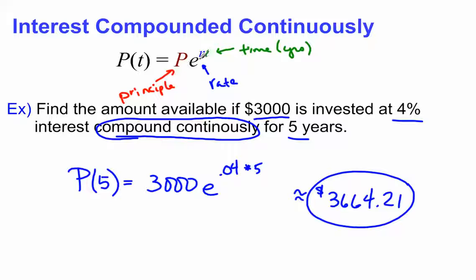P is still the principal, R is still the rate, which we express as a decimal, and T is time in years. The only difference is we note that it's compounded continuously, so we don't have that 1 plus R over N thing. We have an E here instead.